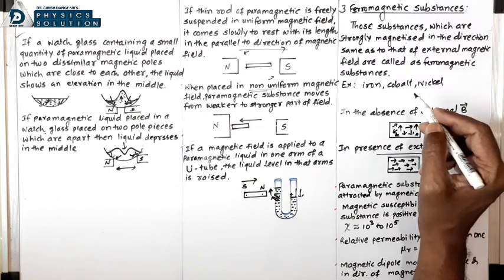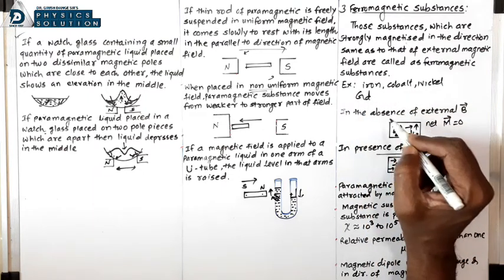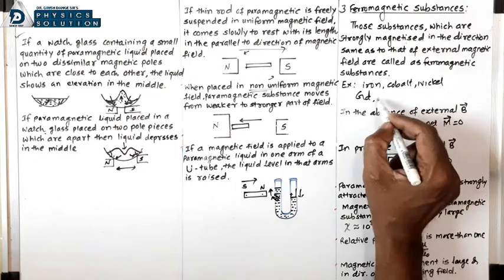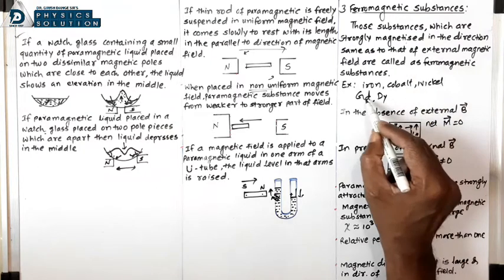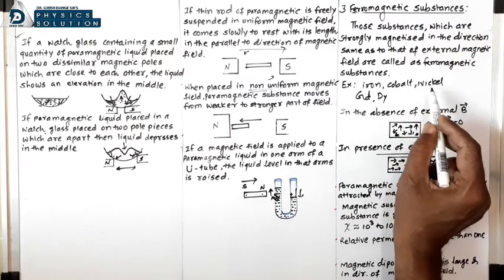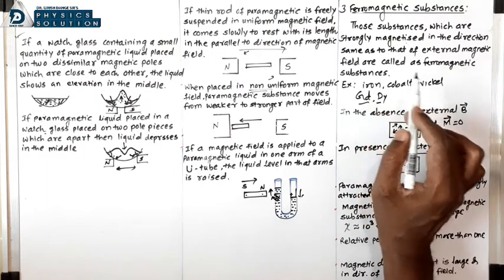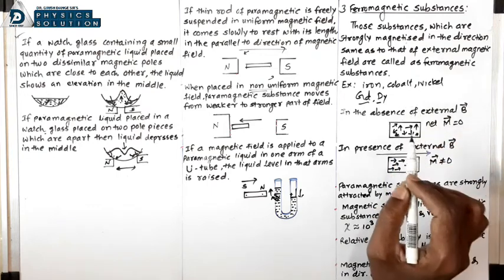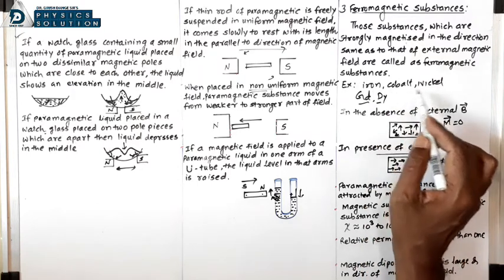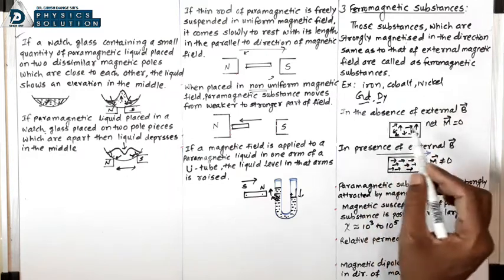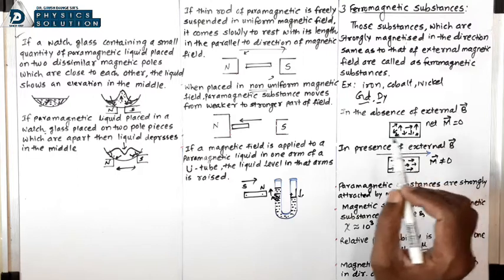Some inner transition elements also show ferromagnetism, such as gadolinium (Gd) and dysprosium (Dy). Some alloys of iron, cobalt, and nickel also show ferromagnetism. Generally, liquids and gases do not show ferromagnetism — only solids, mainly iron, cobalt, and nickel.